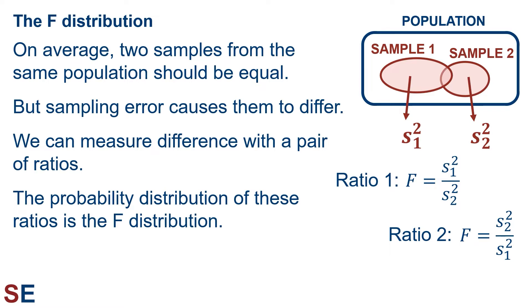The probability distribution of the ratios of sample variances from populations with the same variance is the F-distribution. We'll calculate two ratios — F-values — using each sample variance divided by the other. If the population variances are the same, we would expect these values to be close to one. But if the population variances are different, one of our F-values will be very small and the other very large.